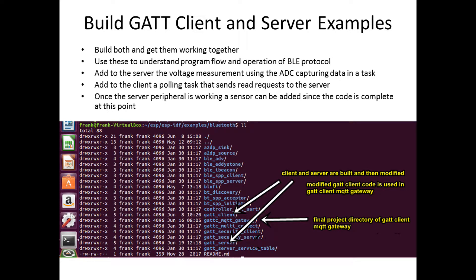Build the GATT client and server examples. These are found under the examples/bluetooth subdirectory. Building both and getting them working together allows one to understand program flow and operation of BLE protocol, and thus one is in a position to add what's required to do voltage measuring and to do client polling.